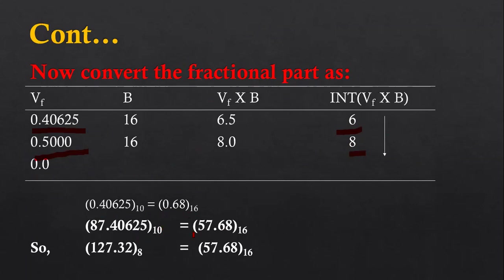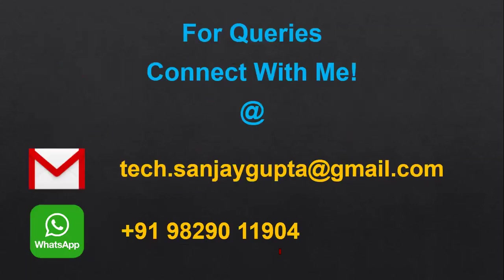Finally, combining all the values together: 87.40625 is converted into 57.68. So the complete answer is: the original number 127.32 in octal was first converted into decimal as 87.40625, and then converted into hexadecimal as 57.68. This way I converted an octal number into a hexadecimal number.